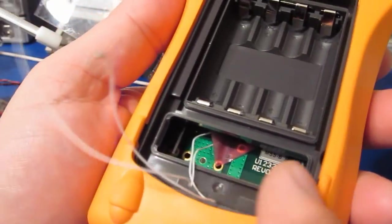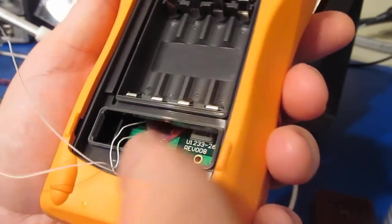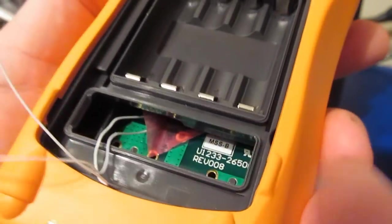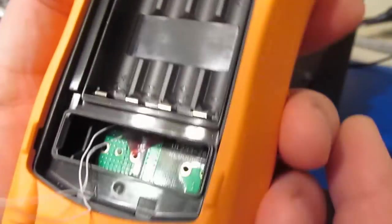This meter doesn't include a fuse because it doesn't have a way to measure current, so it was pretty easy just to put a little piece of tape down there, just kind of strain relief the wires, and then just run them out this cover.